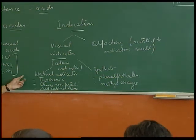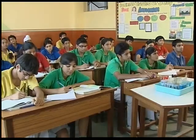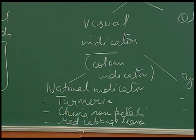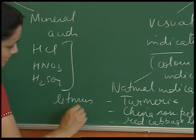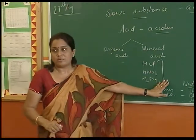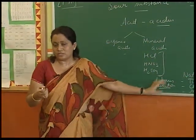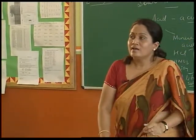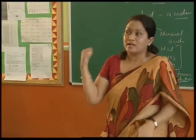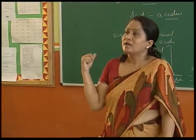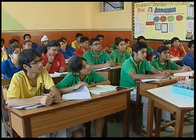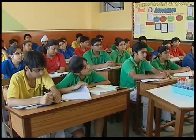There is one more very commonly used natural indicator: litmus solution, which is available in two colors — red and blue. Litmus is obtained from lichens, a symbiotic organism. We will now discuss the color changes of each type of indicator in acidic and basic solutions, and then test two unknown samples to determine whether they are acidic or basic.